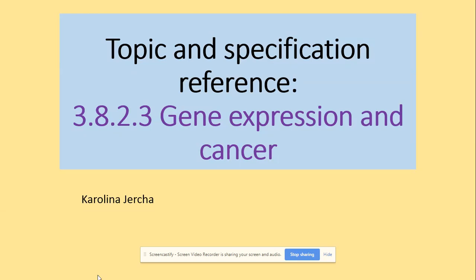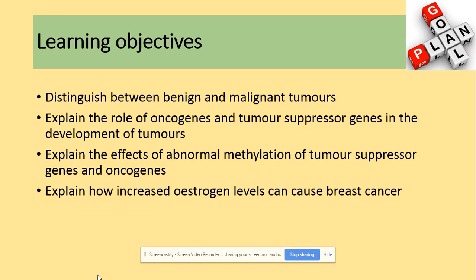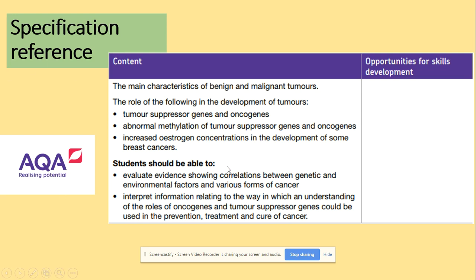Hi guys, welcome to gene expression and cancer. You need to be able to look at the differences between two types of tumour, explain the role of oncogenes and tumour suppressor genes in the development of tumour, explain the effects of abnormal methylation of tumour suppressor genes and oncogenes, and explain how increased oestrogen levels can cause breast cancer. This is our specification and learning objectives.